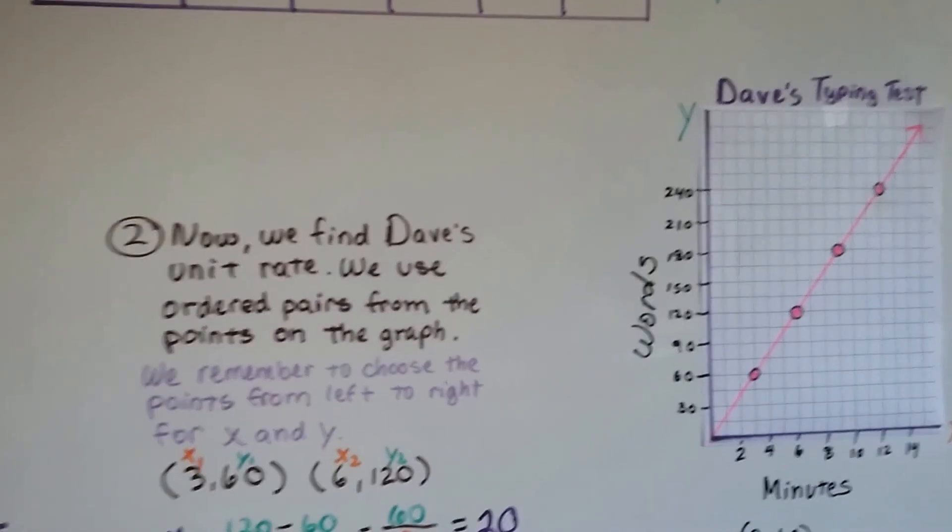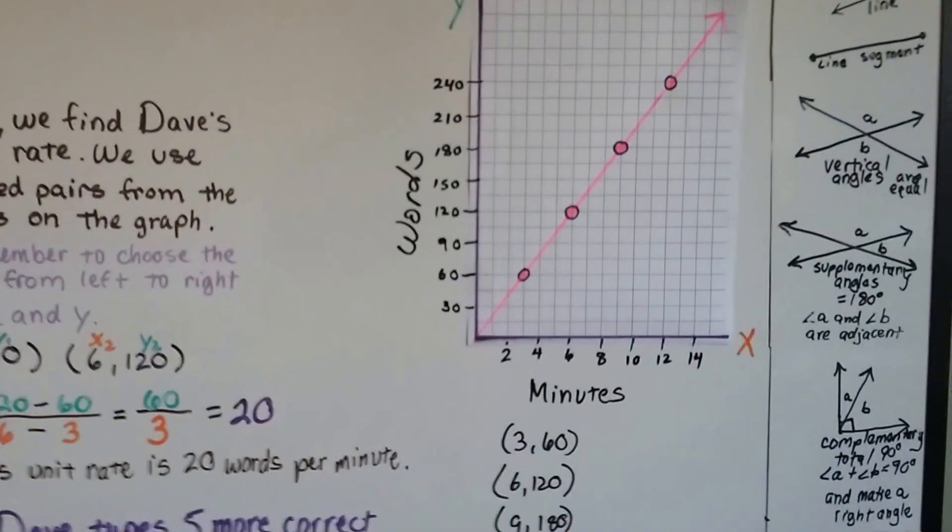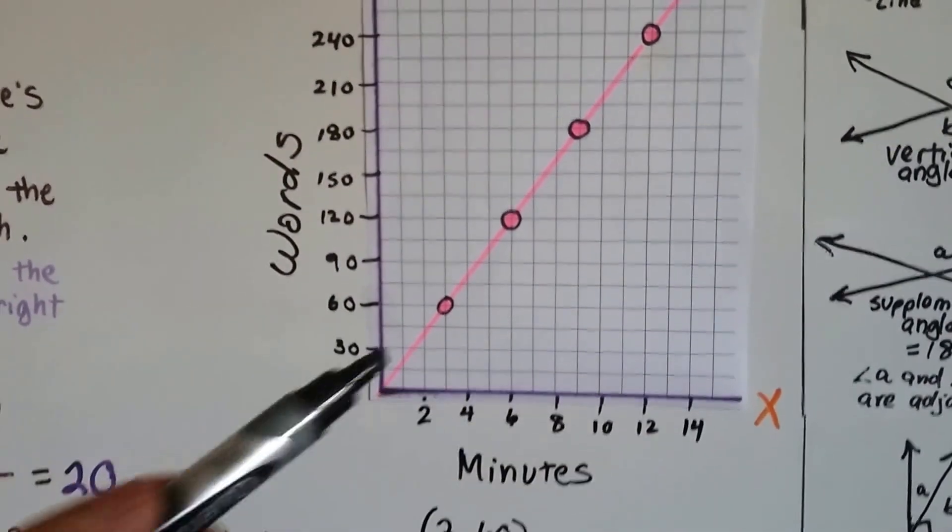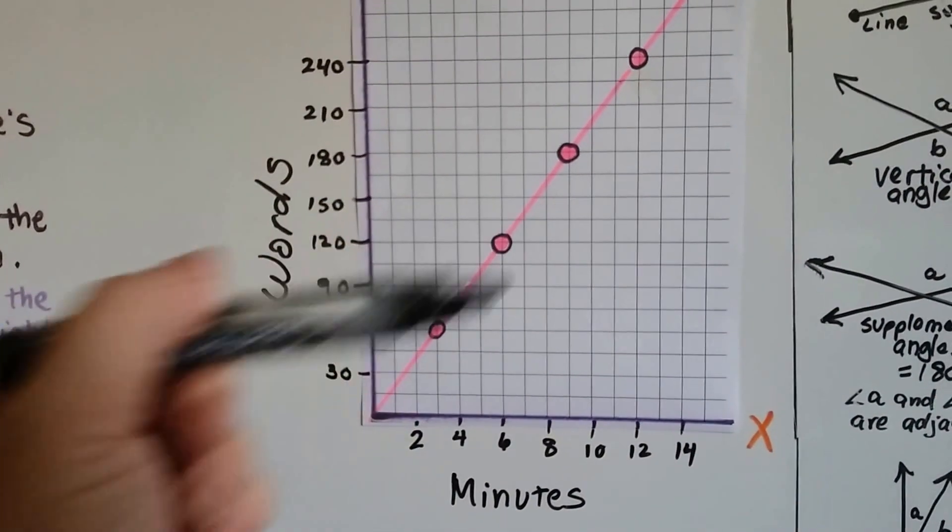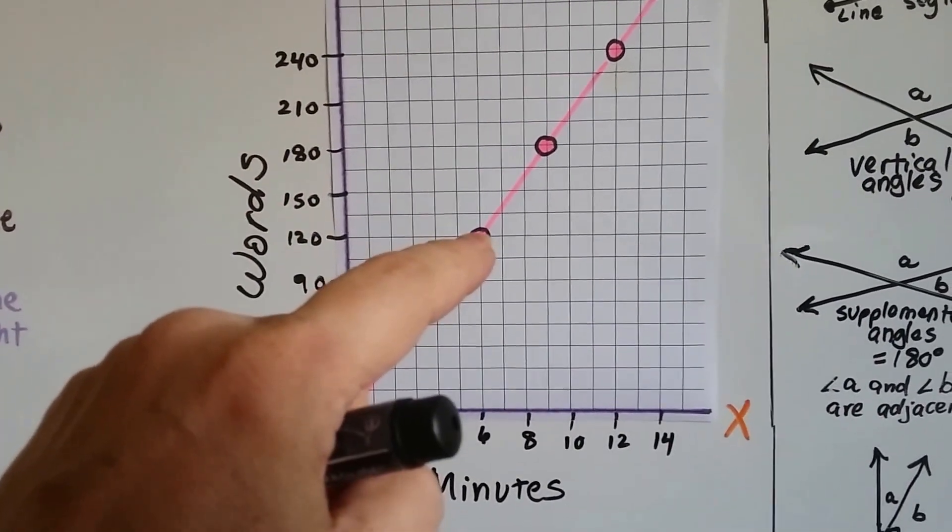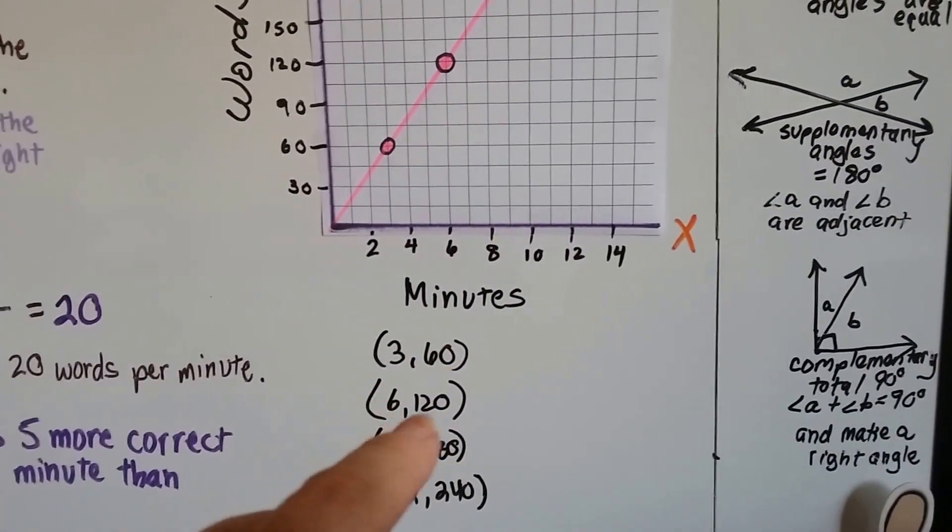So now we find Dave's unit rate. We use ordered pairs from the points on the graph, and we remember to choose the points from left to right for x and y. So we can't choose this one as 1 and then this one is 2. We have to go left to right. So we chose this one is x1 and y1, and this one is x2 and y2.